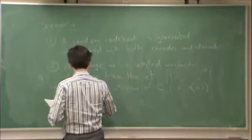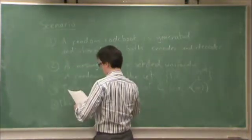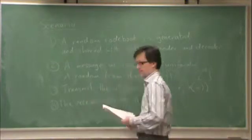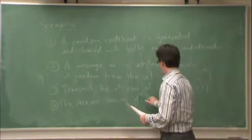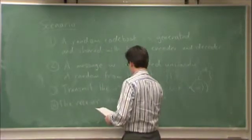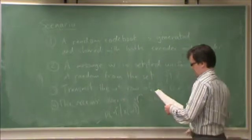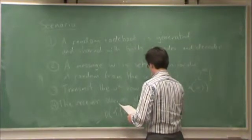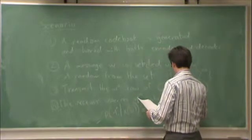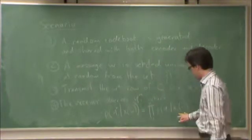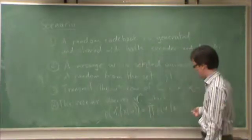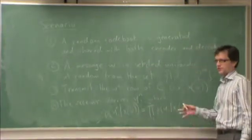Four: the receiver observes the vector y from one to n, so that's the vector of channel observations, where the probability of y from one to n given x and w is equal to the product, i equals one to n, of p y i given x i and w. So remember what this means: this is basically the discrete memoryless channel. In other words, the probability of the vector y given the vector x is equal to the product of each individual channel use. So each individual channel use is conditionally independent.